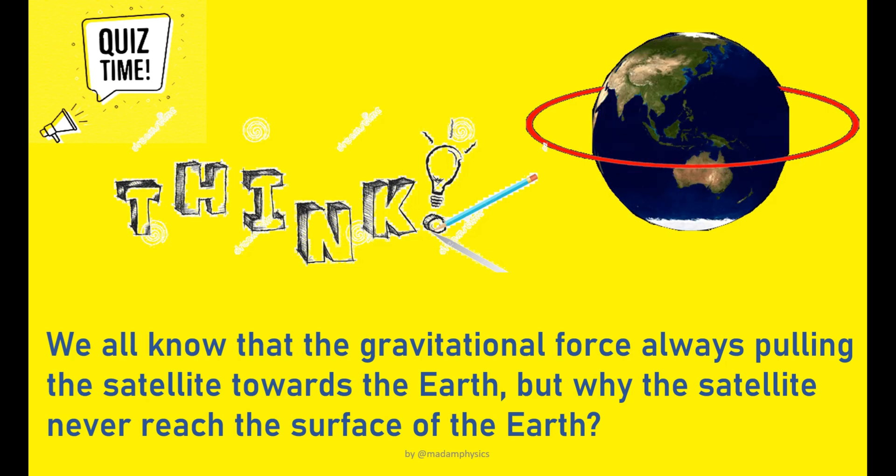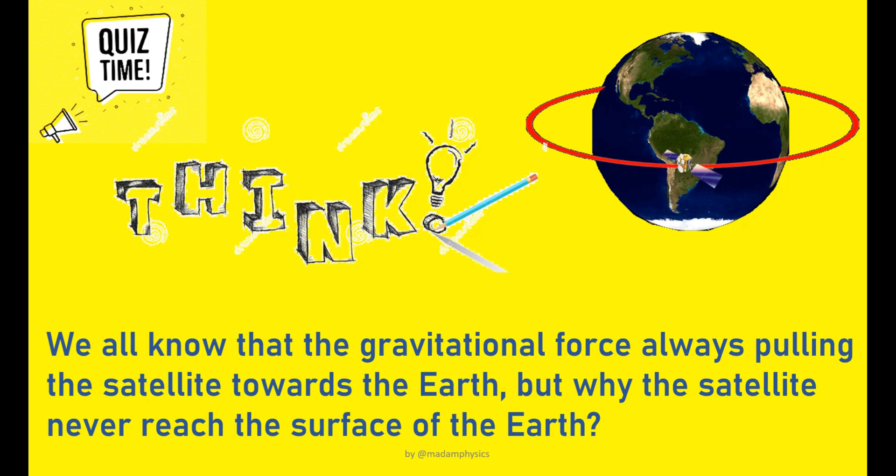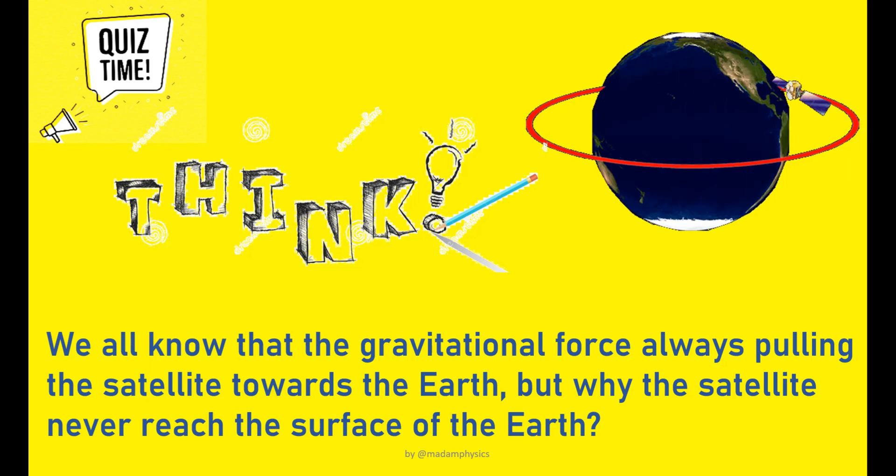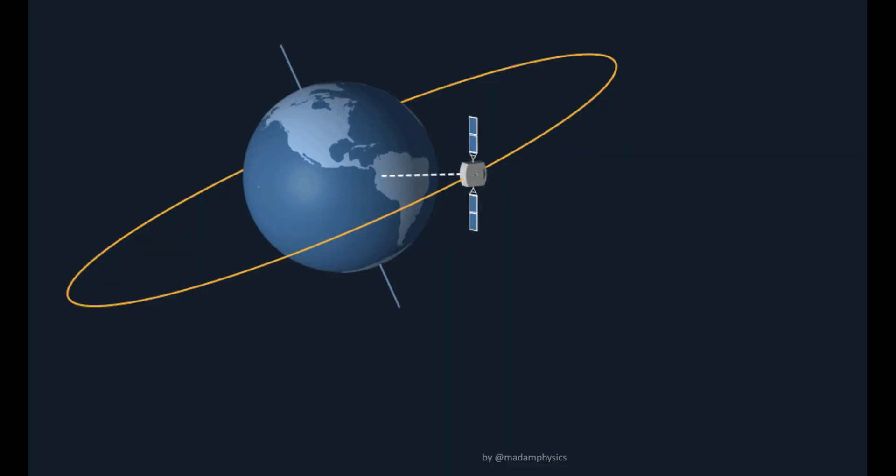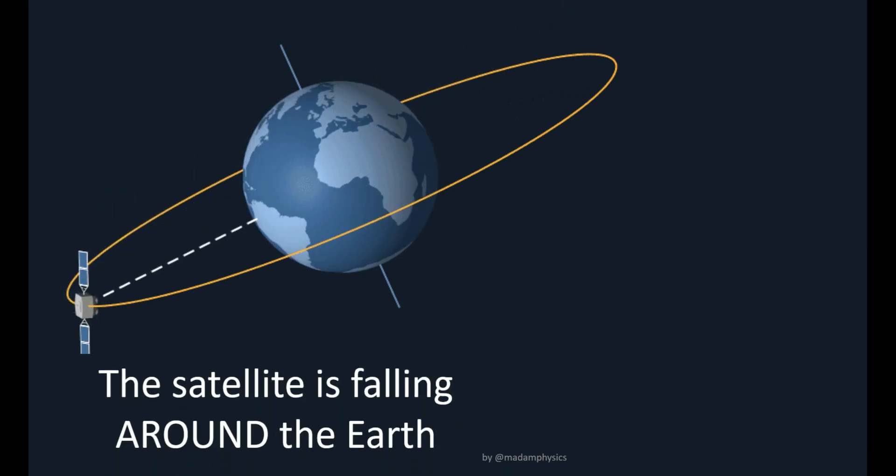We all know that gravitational force is always pulling the satellite towards the Earth. But why does the satellite never reach the surface of the Earth? As we can see here, the satellite will never reach the surface because it is moving sideways very quickly at a very high speed. Therefore, the attractive force that pulls the satellite towards the Earth helps to maintain the satellite moving in orbit around the Earth. We can simply say that the satellite is not falling straight down to the Earth but is falling around the Earth, meaning the satellite is orbiting the Earth.